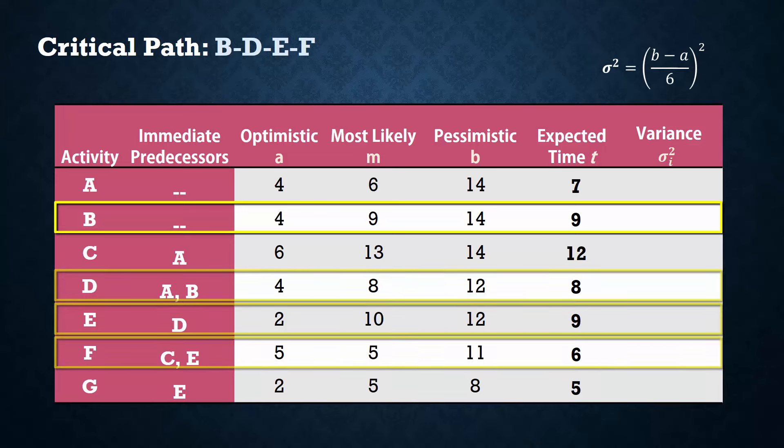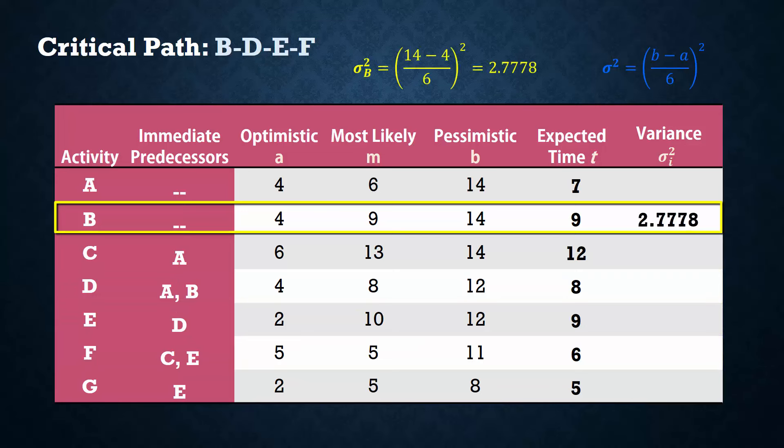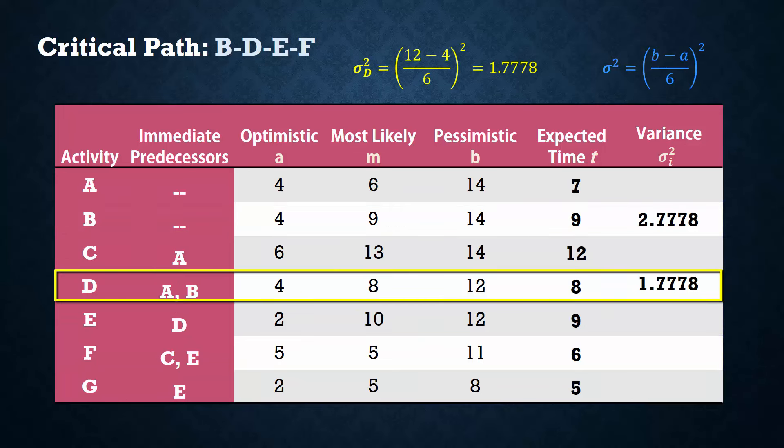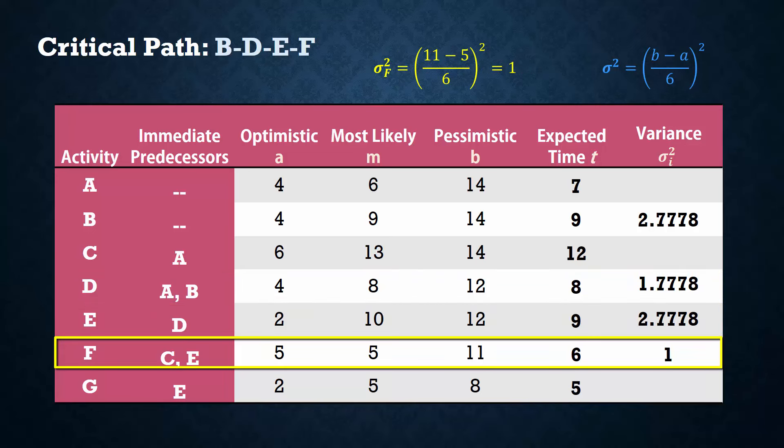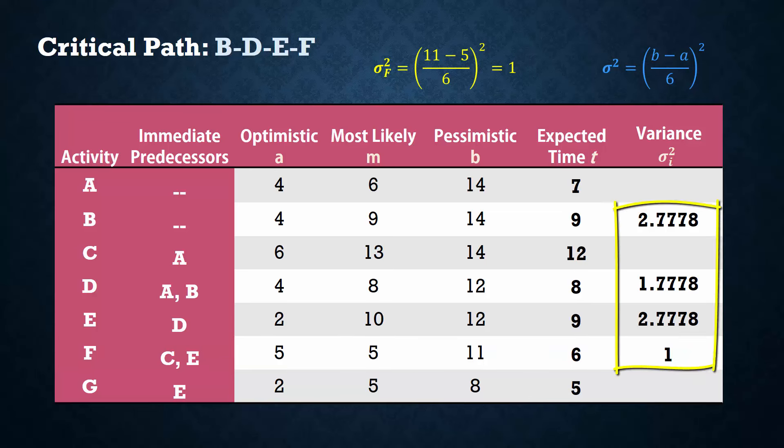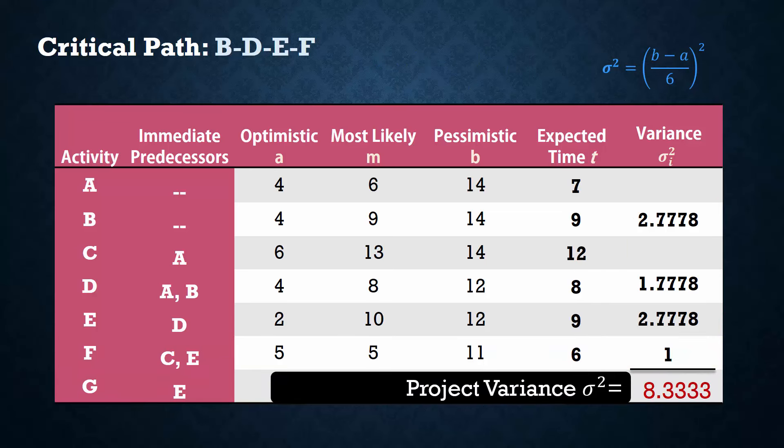Thus, for b, the variance is 2.78. For d, it is 1.78. For e, 2.78. And for f, the variance is 1. And adding this, we have the project variance of 8.33. Then taking the square root, we have the project standard deviation of 2.8867.